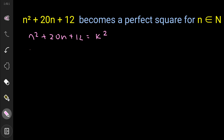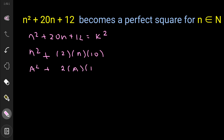Our next step is to make the left hand side a complete square. We already have n², and 20n can be written as 2 × n × 10. So we have a² + 2ab form, and to complete the square we need b², where b = 10, so we need 100. We already have 12, so we add 88 to both sides.